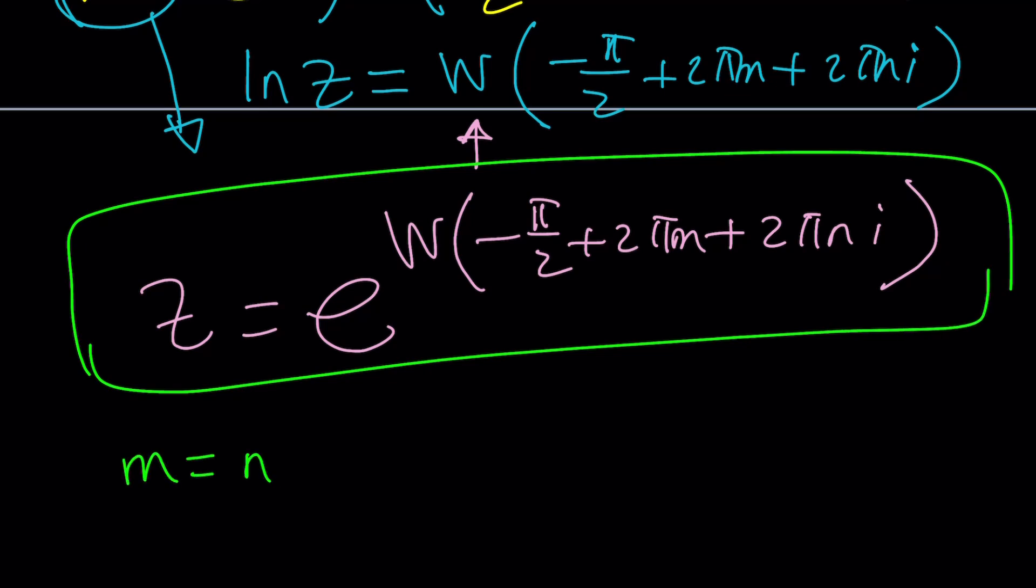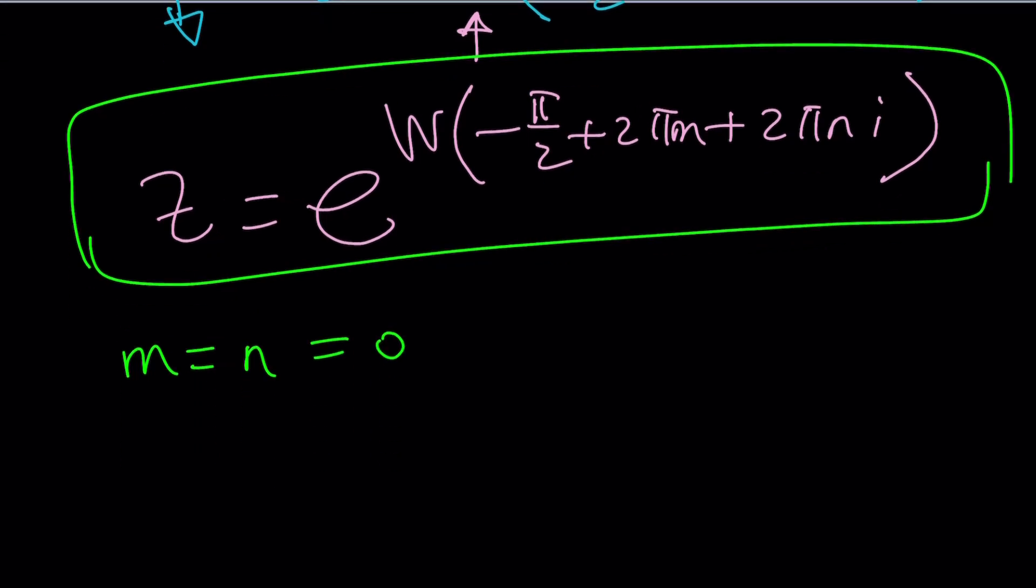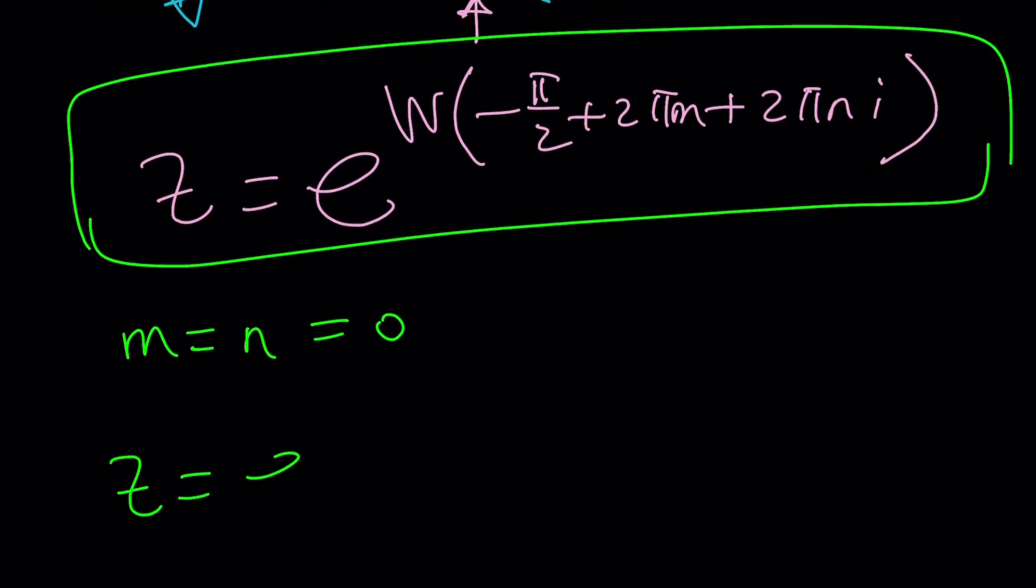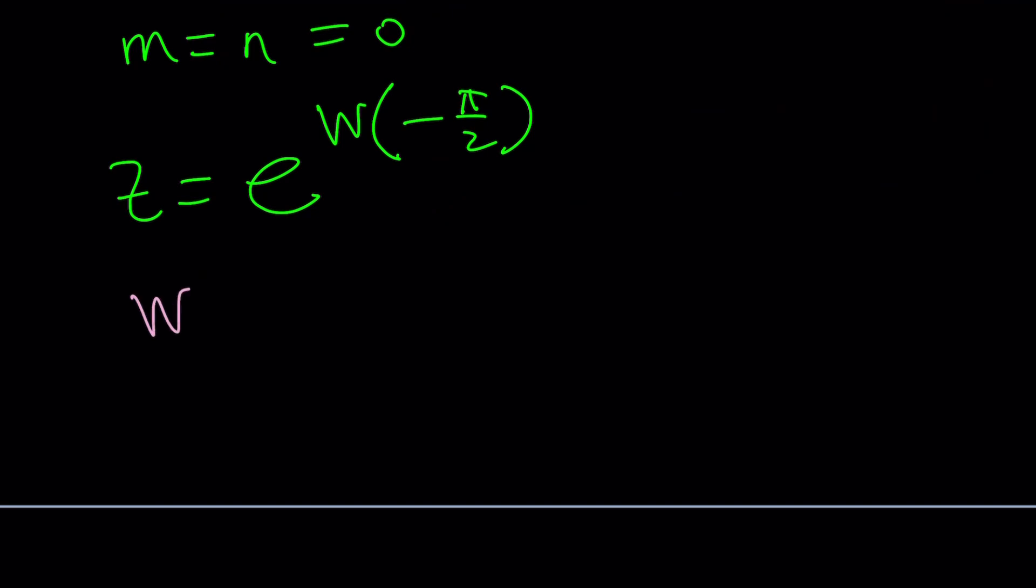Well, let's go ahead and take a look at a specific case, a very specific case. m equals 0, n equals 0. The awesomest case. In that case, z is going to equal e to the power Lambert W of negative pi over 2. Hopefully we can evaluate this. First of all, I want to evaluate the exponent. What is Lambert W of negative pi over 2? Because if I can find it, I can just plug it in. I don't want to write the e every time. It's too much work. I'm lazy.